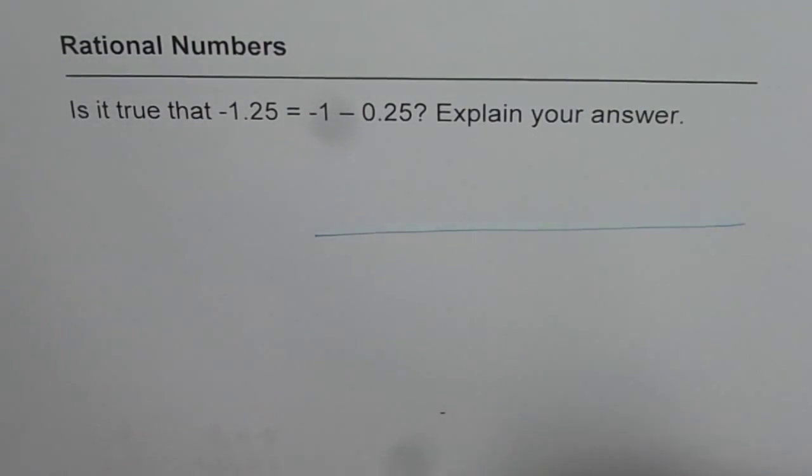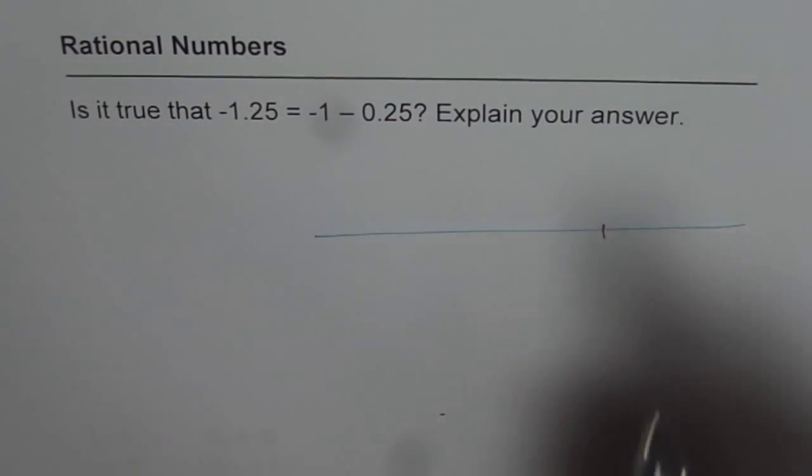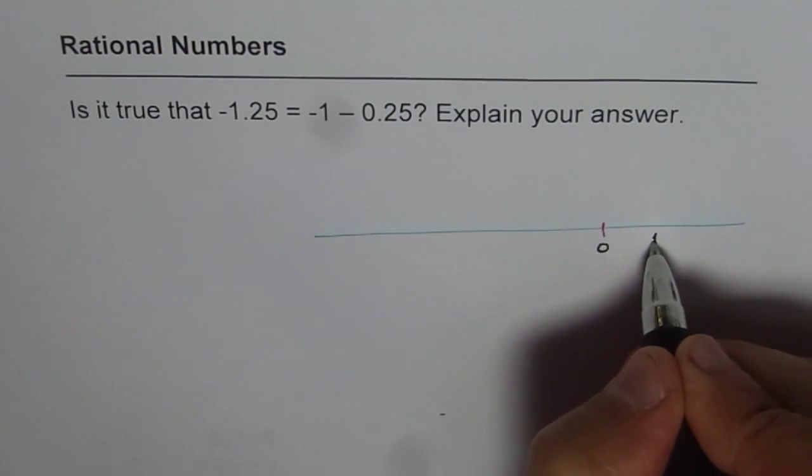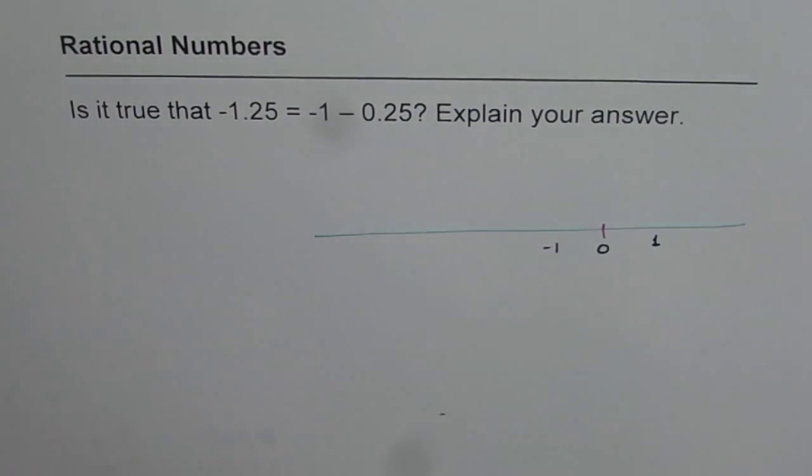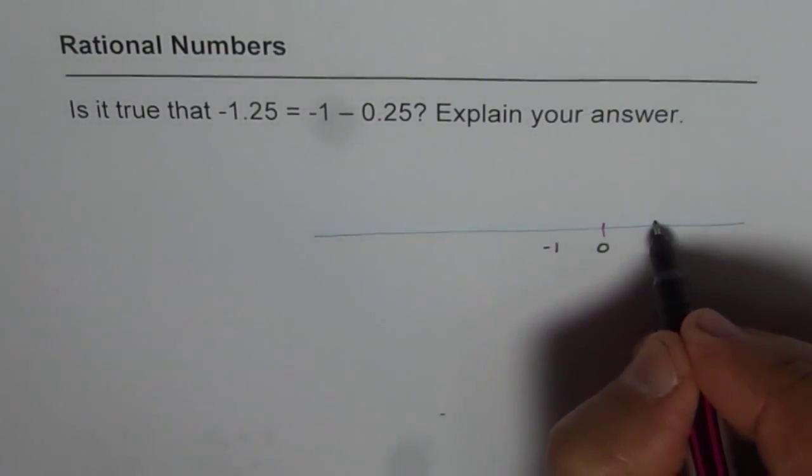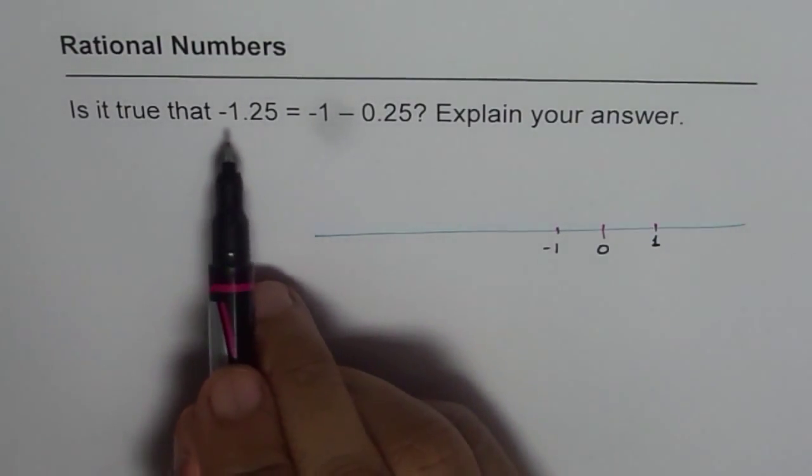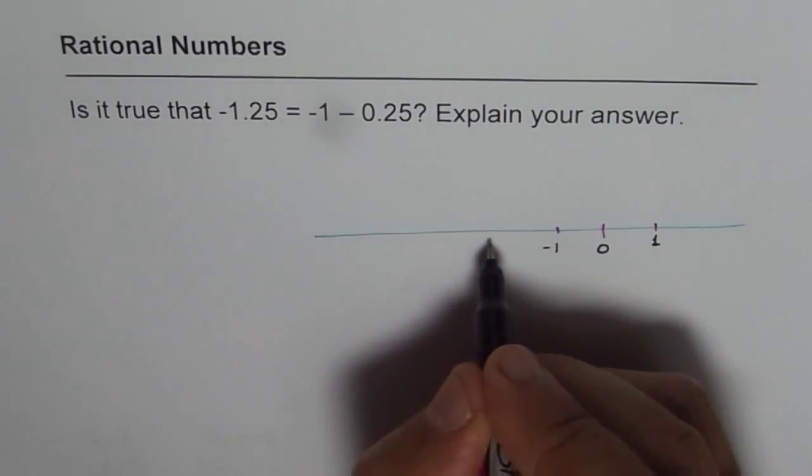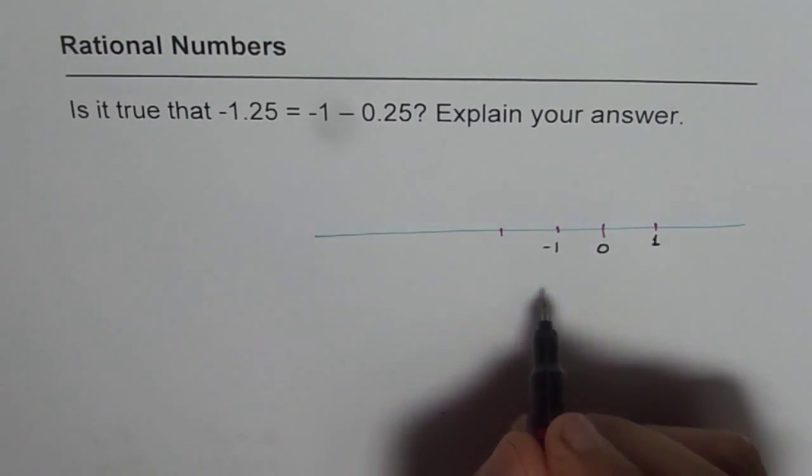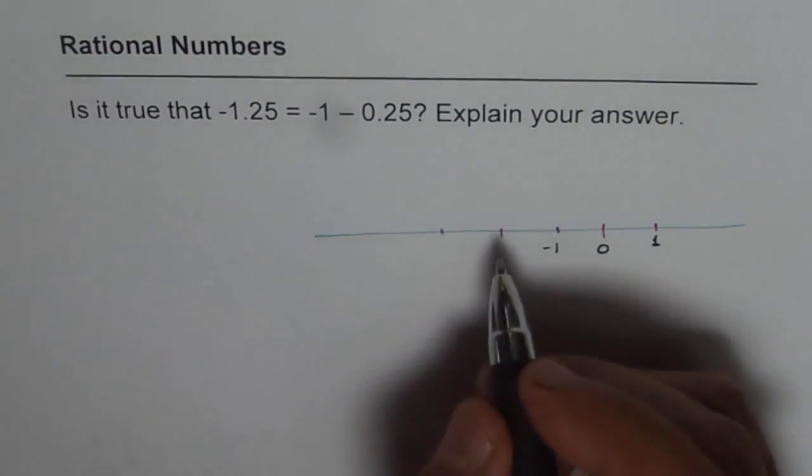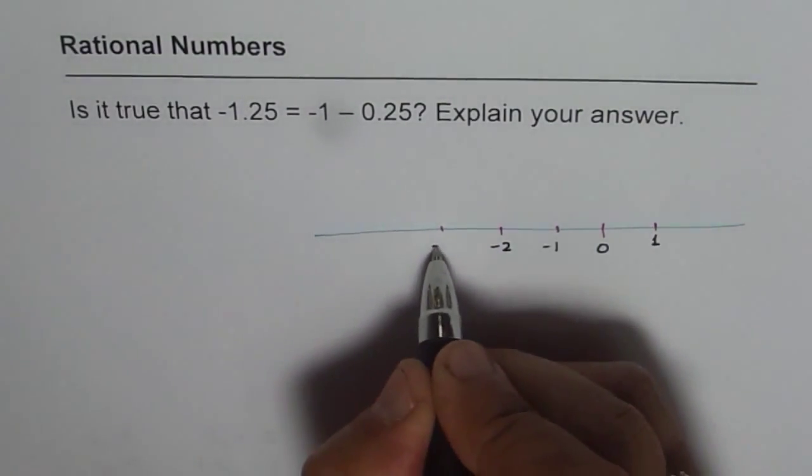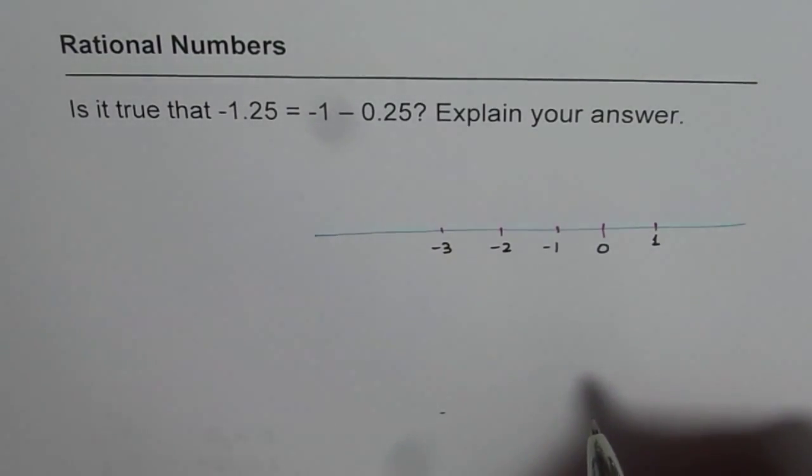Let's consider a number line to help us answer this question. Here we have our 0, and as you know, to the right of 0 we have positive numbers and negative numbers to the left. So let's say this is 1, this is -1. Since we are considering negative numbers, let me go further on the negative side. This becomes -2, and then that is -3.